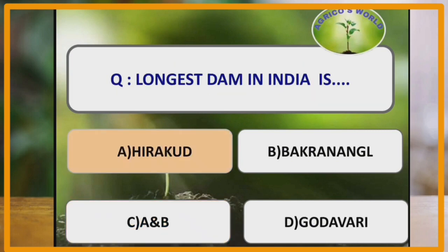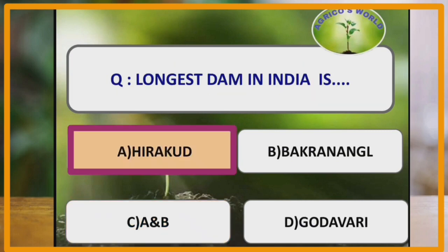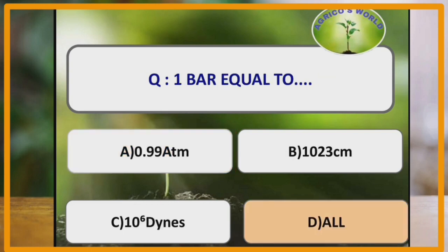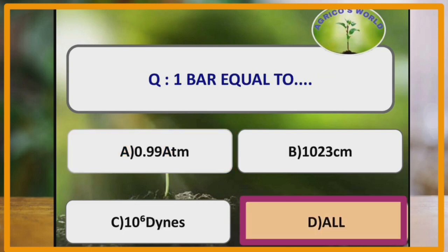Longest dam in India is Hirakud Dam. It is built across Mahanadi River present in the state of Odisha and the length is 4.8 km. 1 bar is equal to 0.99 atmospheres, 1023 cm and 10^6 dynes.